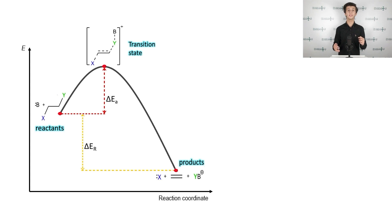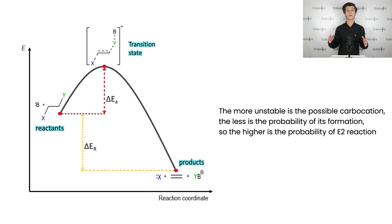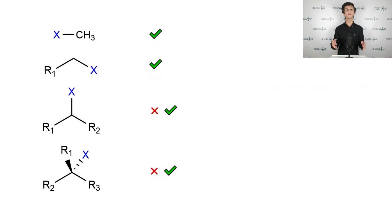The opposite is true for bimolecular, say E2 elimination. The more unstable is the possible carbocation, the less is the probability of its formation, so the higher is the probability of E2 reaction to occur. For instance, methyl and primary alkyl halides react only in E2 fashion as the corresponding carbocations are too unstable.